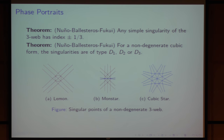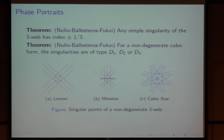For a non-degenerate cubic form, there are three possible types of singularities: D1, also called lemon; D2, one-star; and D3, cubic-star. These are the configurations of the three-web close to a quadratic point.